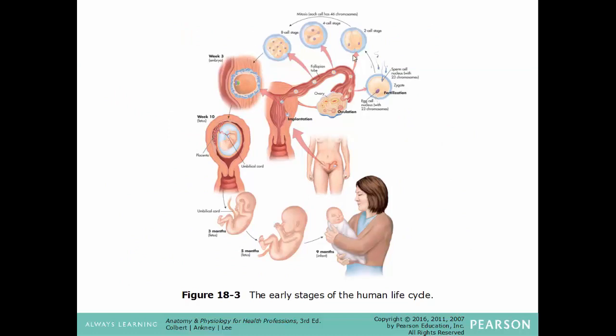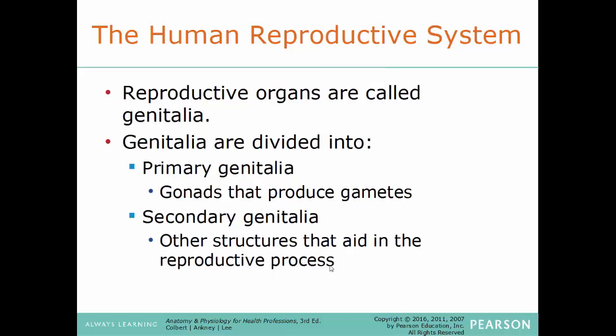In the early stages of the human life cycle, starting with fertilization, one cell becomes two, then four, then eight, continuing to double, progressing to the embryonic stage, then developing into a fetus, and eventually a newborn. The reproductive organs, also known as the genitalia, are divided into primary or secondary. The primary genitalia are the gonads that produce the gametes — testes for males and ovaries for females. Everything else is considered secondary genitalia or an accessory organ, regardless of how important it is.